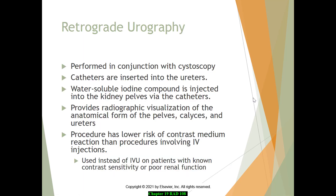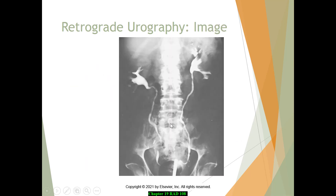Retrograde urography is usually done under cystoscopy, where a camera is placed into the ureters to visualize what's occurring at the kidney level — examining the kidney pelves, calyces, and ureters. This procedure carries a lower risk of contrast medium reaction and may be performed instead of an IVU when a patient has contrast sensitivity or poor renal function.